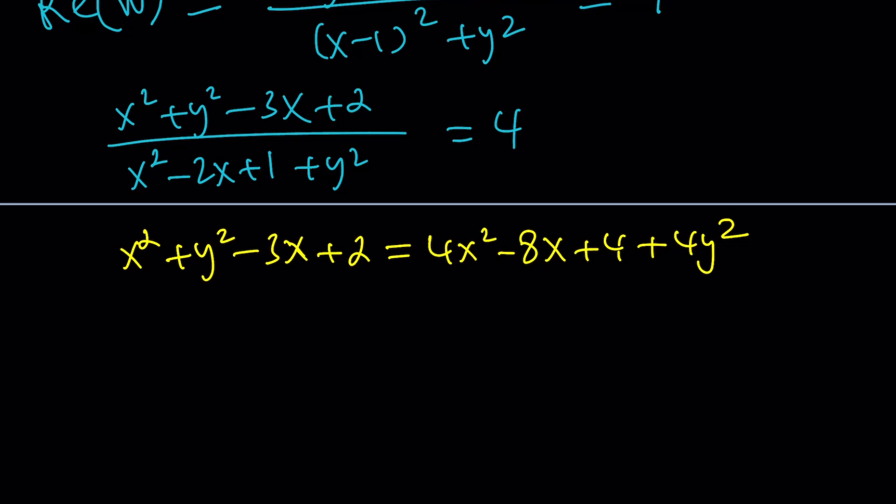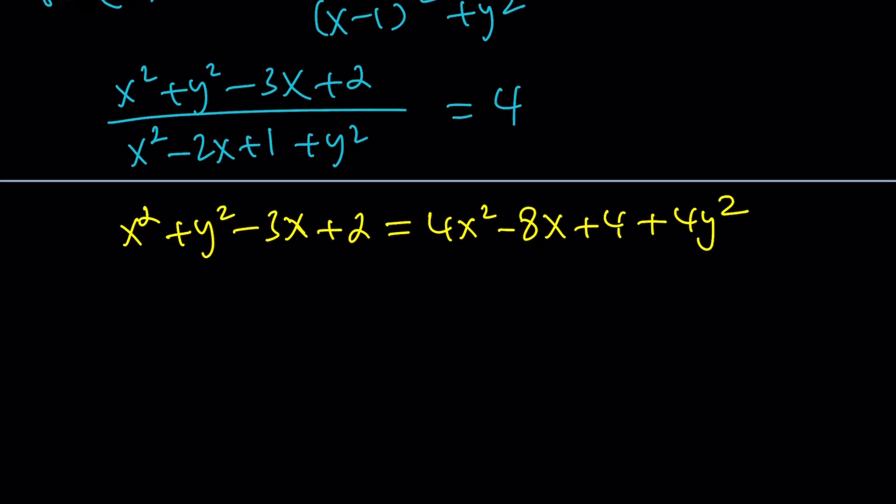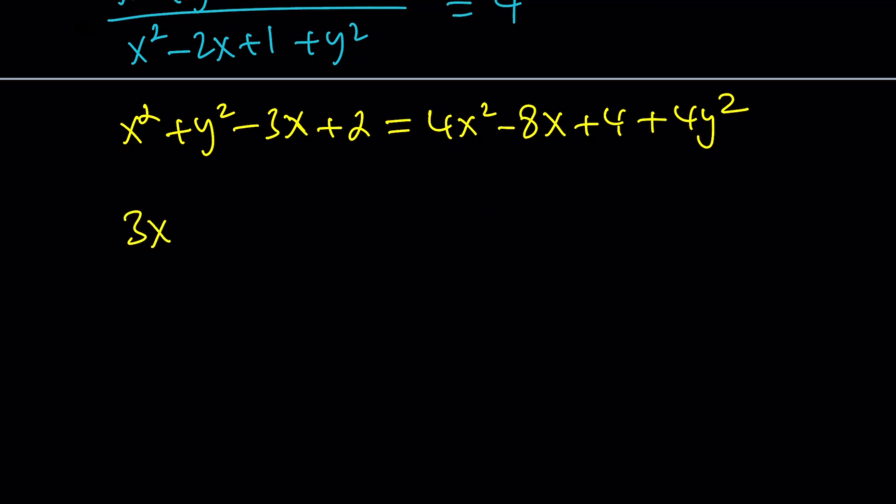Let's put the X squared, Y squared, everything on the right-hand side because that's where we get more X squared and Y squared. So subtracting is going to give us 3X squared and then 3Y squared. And now we're going to bring the negative 3X over, but that's a negative 8X plus a 3X. That's going to be minus 5X. And now we have a 4 minus 2, and that'll be a positive 2. And this is equal to 0.